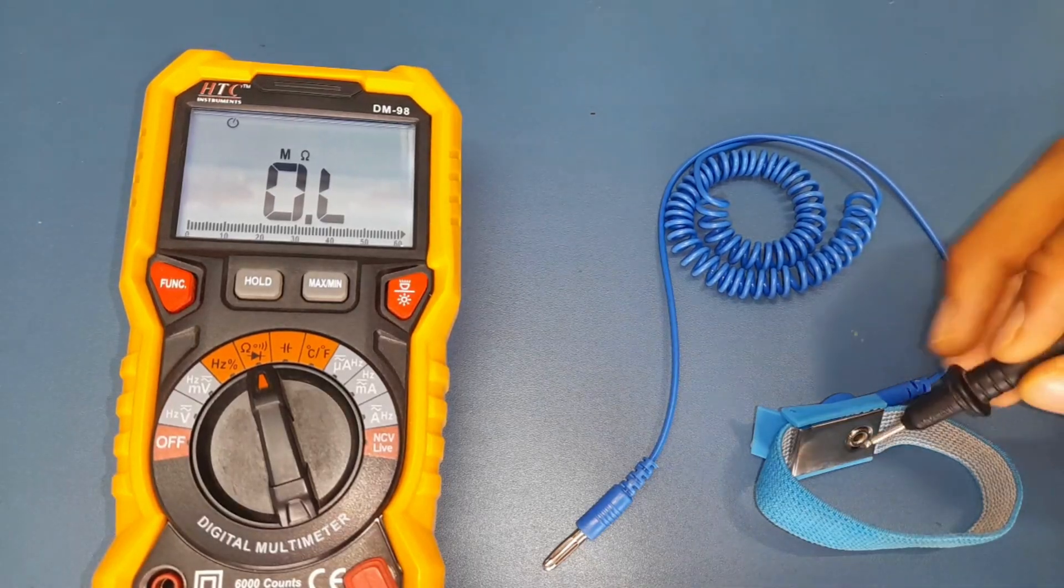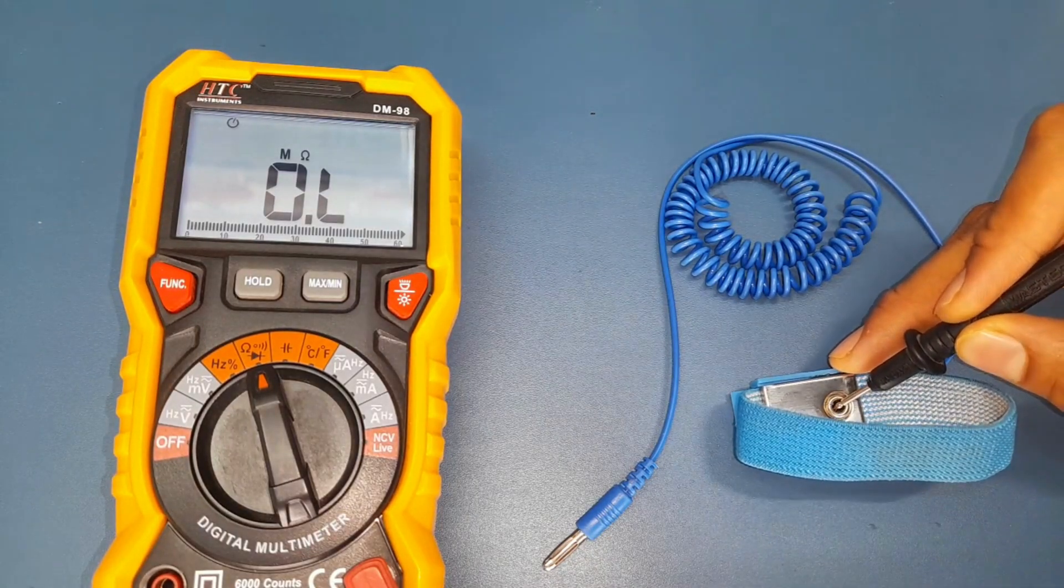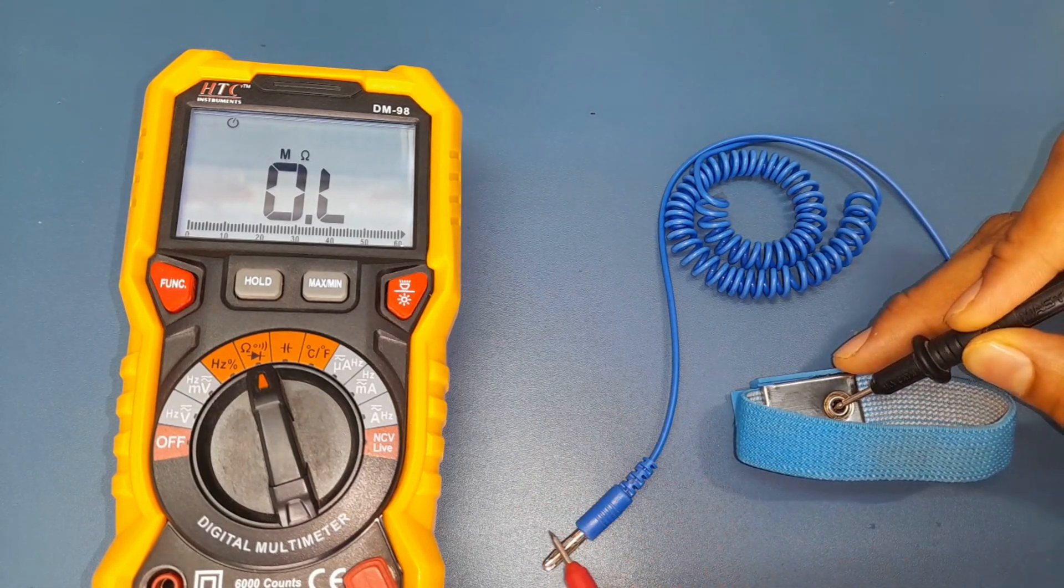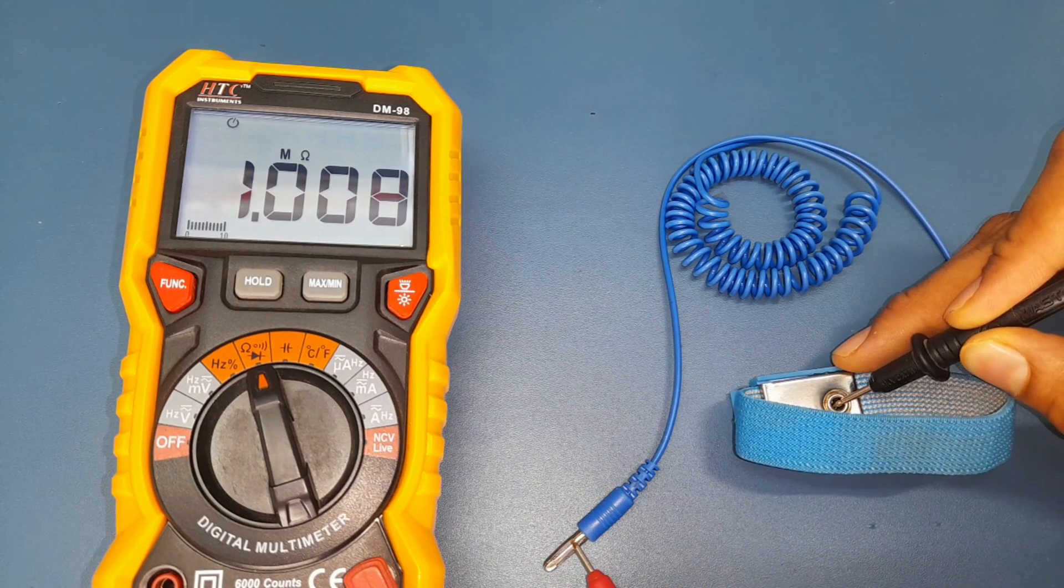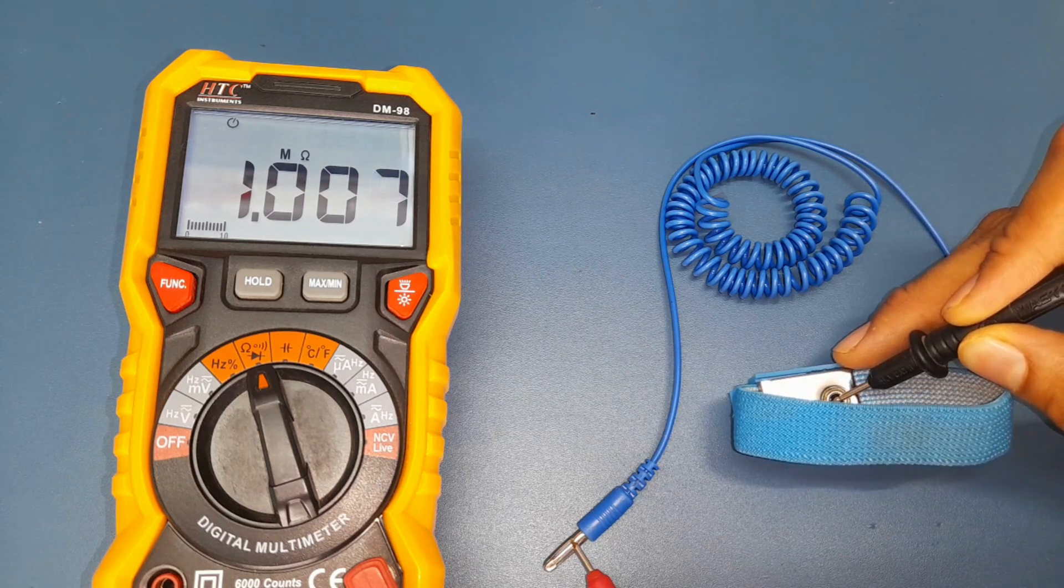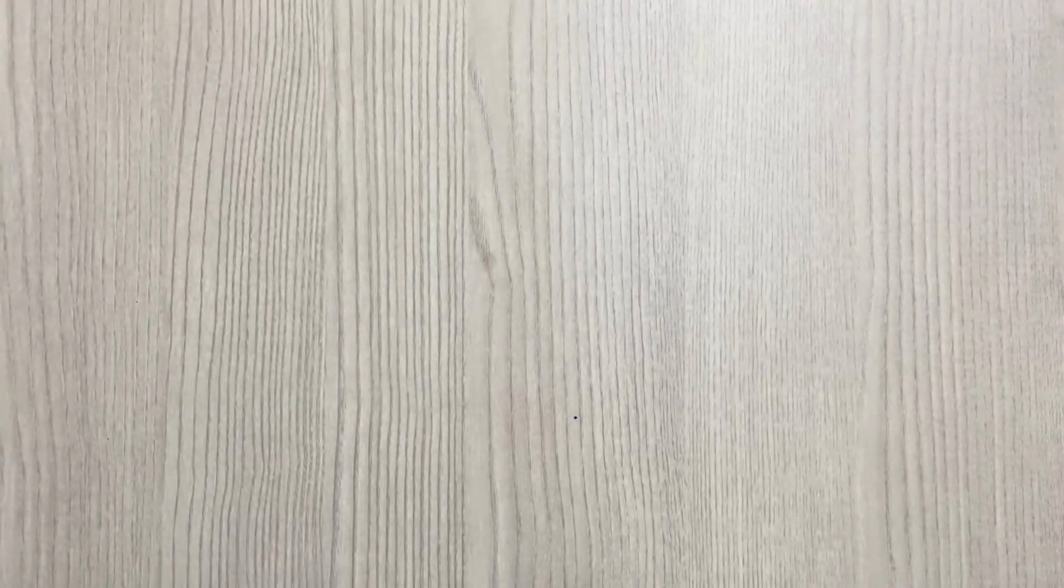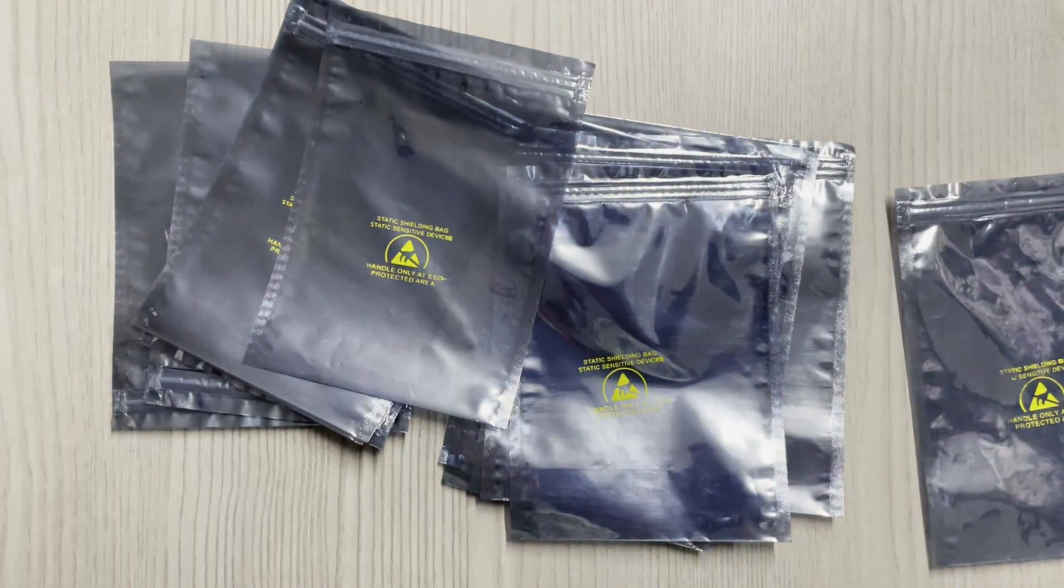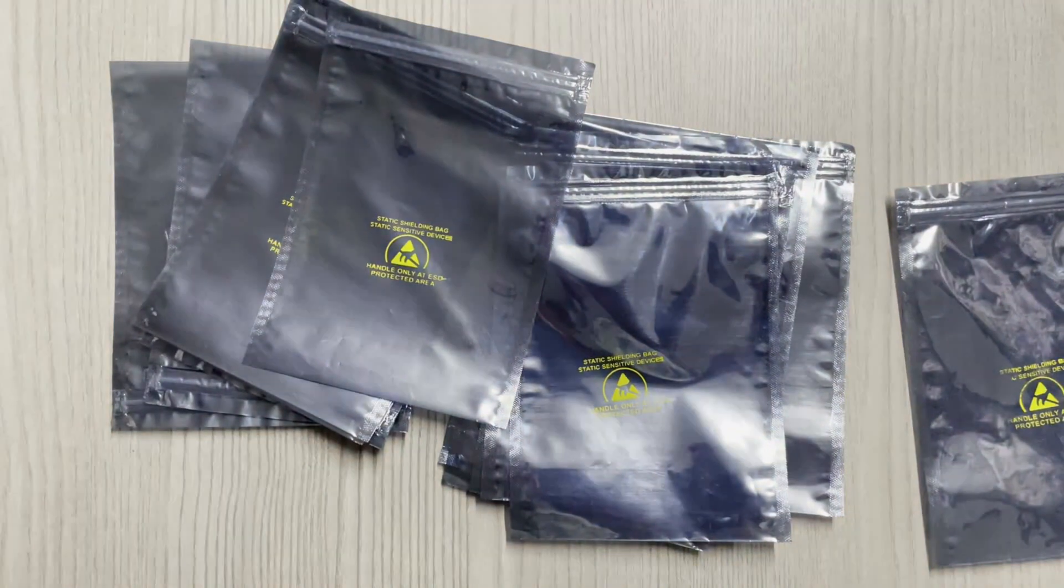Also, specifically designed ESD straps are available offering one mega ohm of resistance. It will save your component getting directly discharged from you instead of the mat. Also use the ESD bags to store your circuit and component safely from the ESD damage. It offers Faraday cage protection for the things inside it.